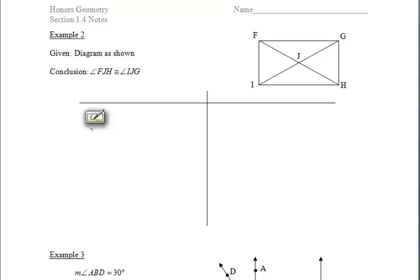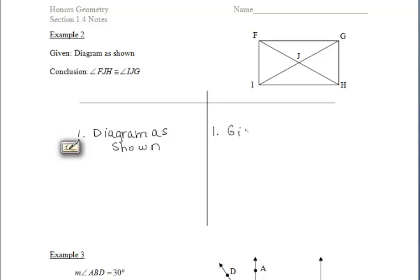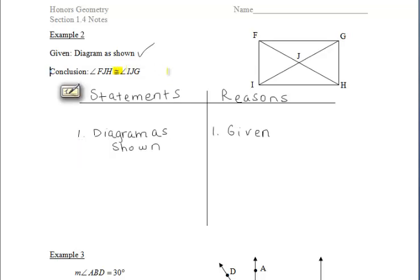Let's take a look at the second example. For this one, we're just given the diagram as shown. If you are doing proofs out of the textbook, make sure that you are redrawing that diagram. Don't forget to write "statements" and "reasons" at the top. Note that it says "conclusion" instead of "prove" — conclusion and prove mean the same thing and can be used interchangeably. In the end, we want to prove that angle FJH and angle IJG are congruent.